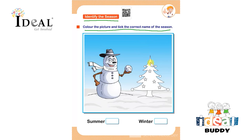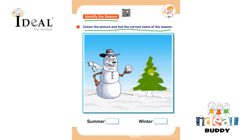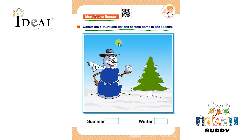The child has to color the Christmas tree — they can use any color. You can also emphasize by asking them which color we use for a Christmas tree. For the snowman, they can use any color as well. They can use pencil colors, crayons, or sketch pens. After coloring, the child has to identify the correct season and put a tick mark next to its correct name.